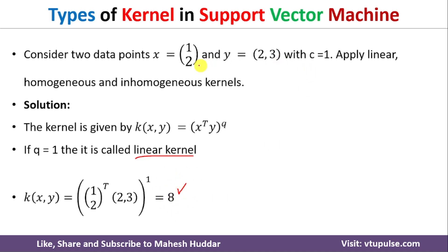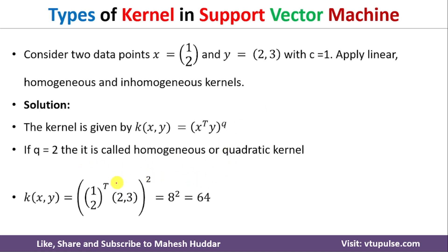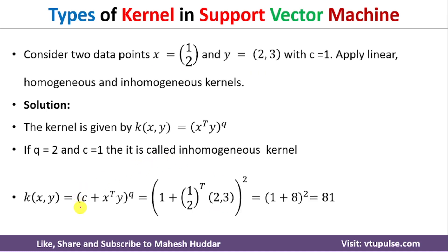For the homogeneous polynomial kernel with q equal to 2, we already calculated x transpose y = 8, so 8 raised to 2 equals 64. The homogeneous (quadratic) kernel value is 64. For the inhomogeneous kernel, k(x,y) = (c + x transpose y) raised to q = (1 + 8) raised to 2 = 9 squared = 81. So the inhomogeneous kernel value is 81.